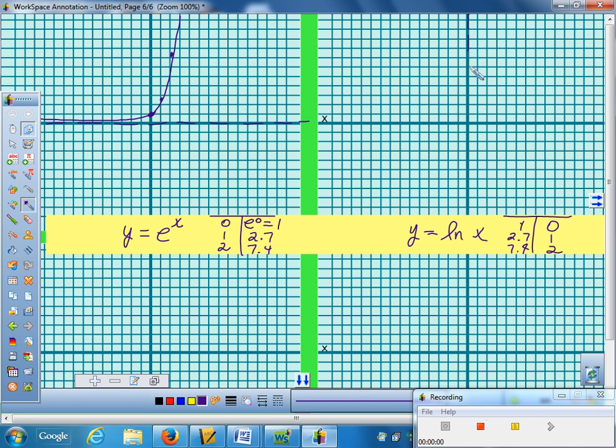Consequently, since it's an inverse, it has a vertical asymptote, and it crosses at (1, 0) over on the right side. Natural logs rise very slowly compared to the exponential functions that rise very quickly. So this time, I would be going over 2.7, up 1, over 7.4, up 2. And a log will then rise very slowly.